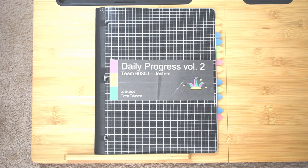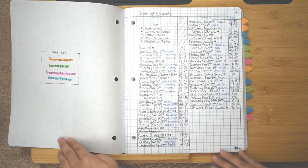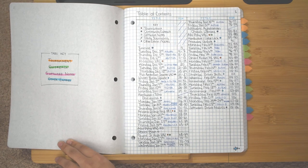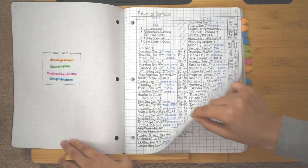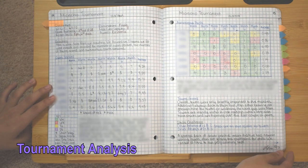Here is volume two of our engineering notebook. There are a few formatting changes that were made to this volume to make our information easier to access and understand for both ourselves and the judges. For example, I improved the color coding in the table of contents, adding short titles for the daily entries and small adjustments.